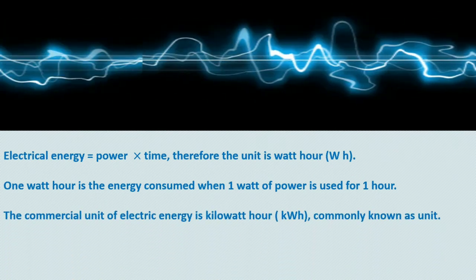The commercial unit of electric energy is kilowatt hour, commonly known as unit. On calculation, 1 kilowatt hour equals 1000 Watt into 3600 seconds, which equals 3.6 × 10⁶ Watt seconds or 3.6 × 10⁶ Joules.